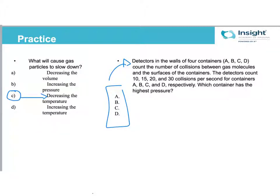Detectors in the walls of four containers A, B, C, and D count the number of collisions between gas molecules and the surfaces of the containers. The detectors count 10, 15, 20, and 30 collisions per second. The highest pressure is going to be the container with the highest number of collisions per second.